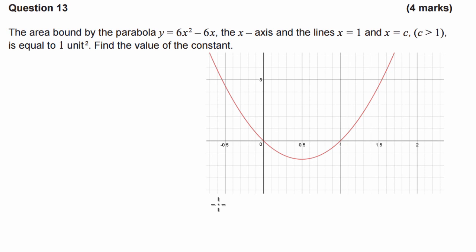G'day guys, we've got an exam question here that involves integration. The question says we've got the area bound by the parabola y equals 6x squared minus 6x, the x-axis and the line x equals 1 and x equals c, with c being greater than 1, is equal to 1 unit squared. Find the value of the constant.